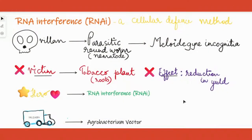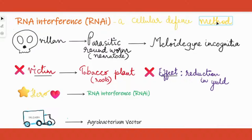Let's have a quick understanding of what RNA interference is. This is a method present in all eukaryotes as a cellular defense mechanism, and in our case it is used to make transgenic tobacco.